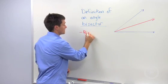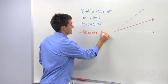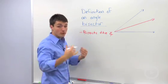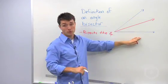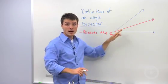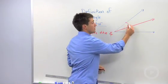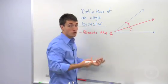The first thing is it bisects the angle, creating two congruent angles. So if I have an angle that's in blue here, and the red ray is my angle bisector, then it has created two congruent angles.